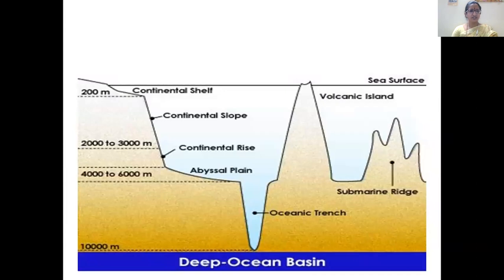From 0 to 200 meters is the continental shelf. Going a little deeper is the continental slope, and from 3000 to 6000 meters is the continental rise. Then comes the abyssal plains, then the oceanic trench, then the submarine ridge. Here I have shown these features based on the depth of the oceanic floor, and we will go into detail on each topic.